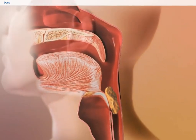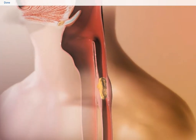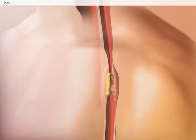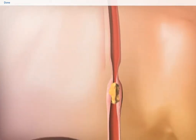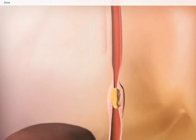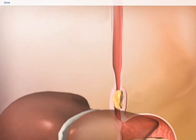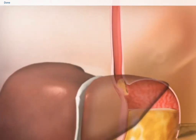The bolus then passes from the oropharynx to the pharynx and into the esophagus. Involuntary muscular contractions, called peristaltic waves, move the bolus down the esophagus and into the stomach.